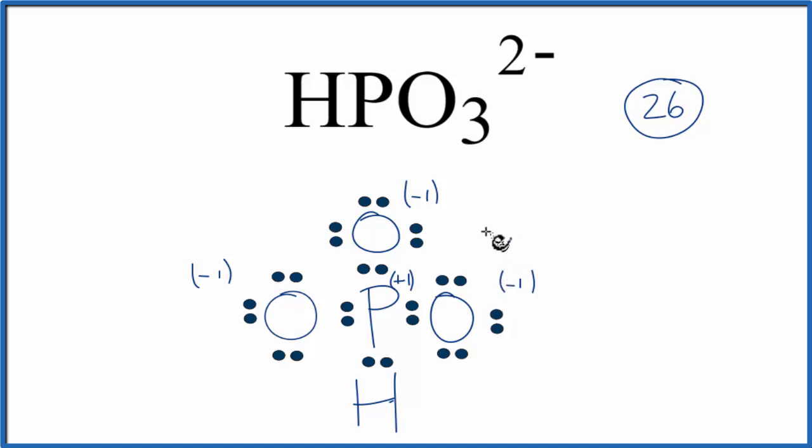We'd like our formal charges to be as close to 0 on all the atoms as possible. So ideally, we'd have a negative 1 on oxygens, and that would be it. I also have information here. This H is in front of the PO3. That means this is probably an acid. And with these oxy acids, the H is usually attached to an oxygen. So let's move this H over to the oxygen, and then recalculate the formal charges.